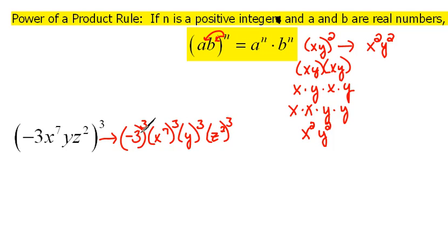And now we've got things to clean up. Negative 3 to the third power would be negative 27. And here we have a power raised to a power. That was one of our rules from earlier that says when you have a power raised to a power, you're supposed to multiply. So that would be x to the 21st power.